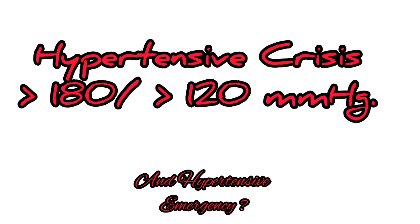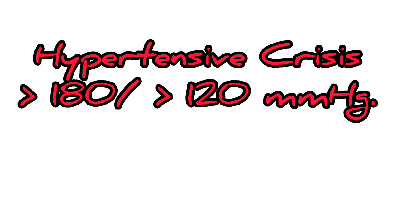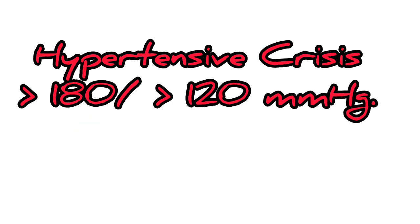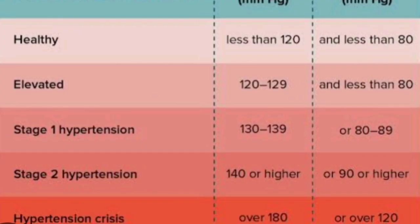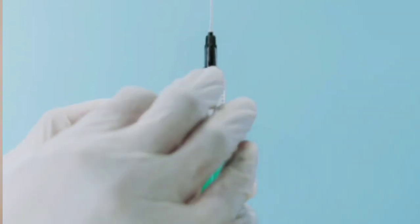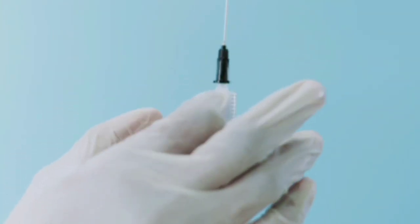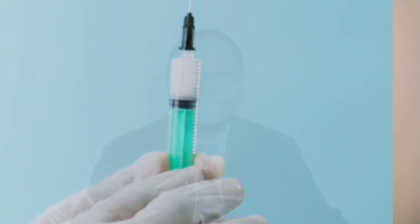Hypertensive crisis is when the systolic blood pressure is above 180 and the diastolic blood pressure is greater than 120. Hypertensive crisis is also a severe hypertension and follows the same treatment protocols, though it has a high probability of complications.